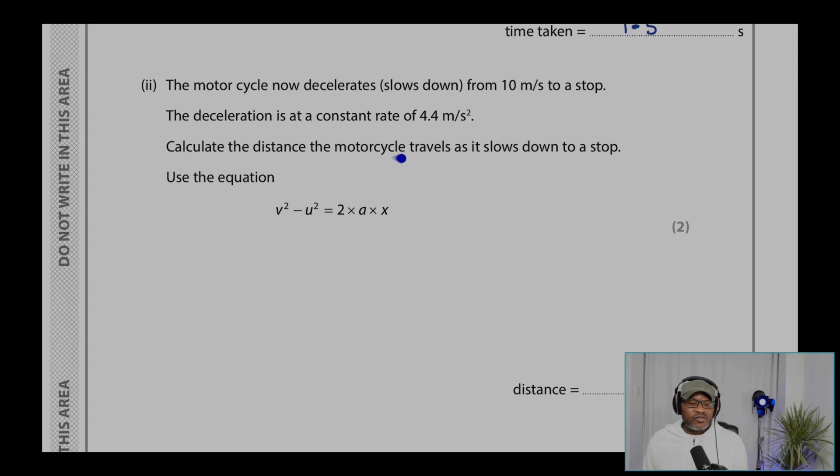Calculate the distance the motorcycle travels as it slows down to a stop. Use the equation V squared equals U squared minus 2AX,